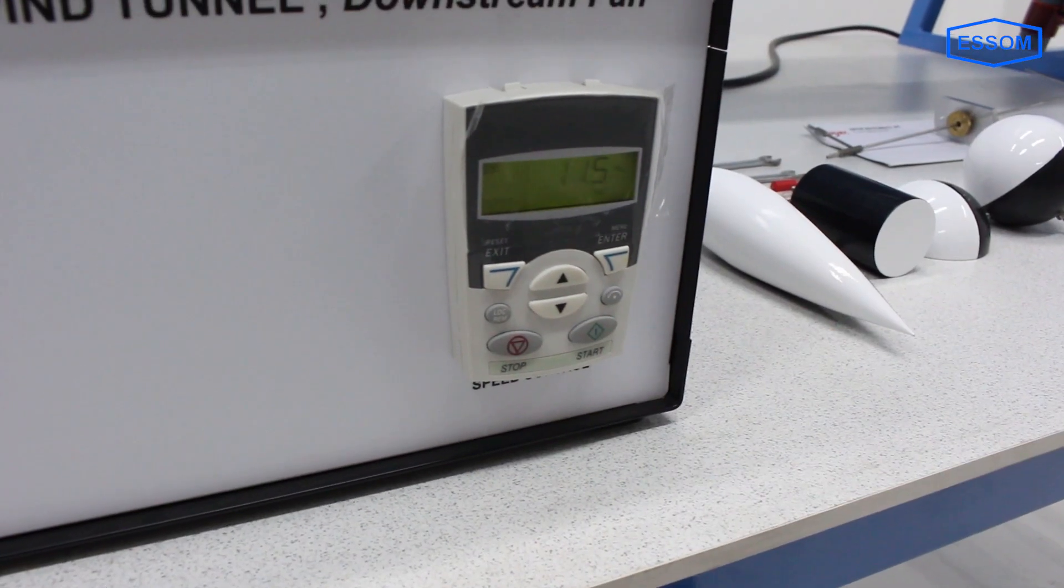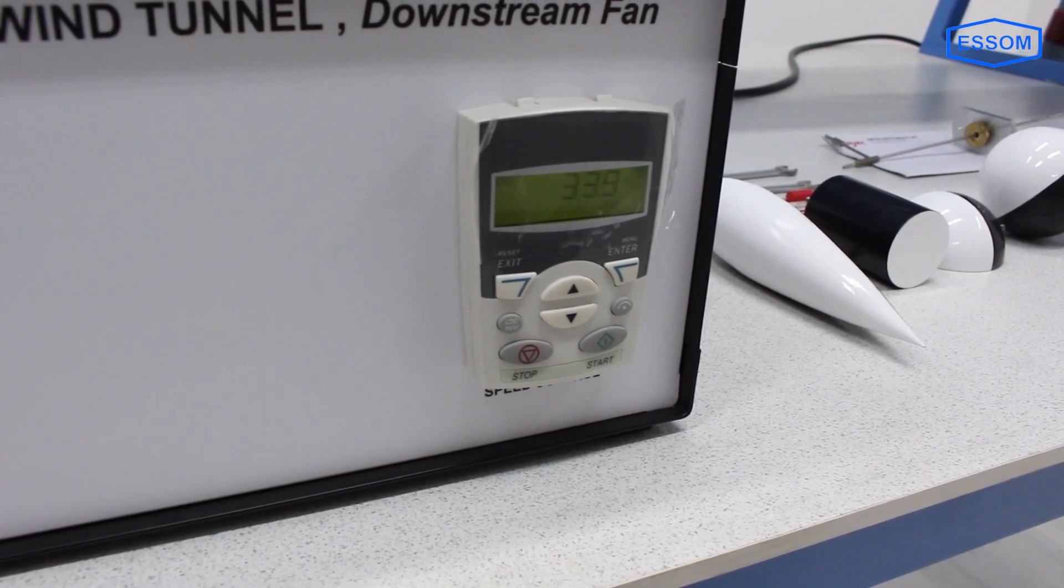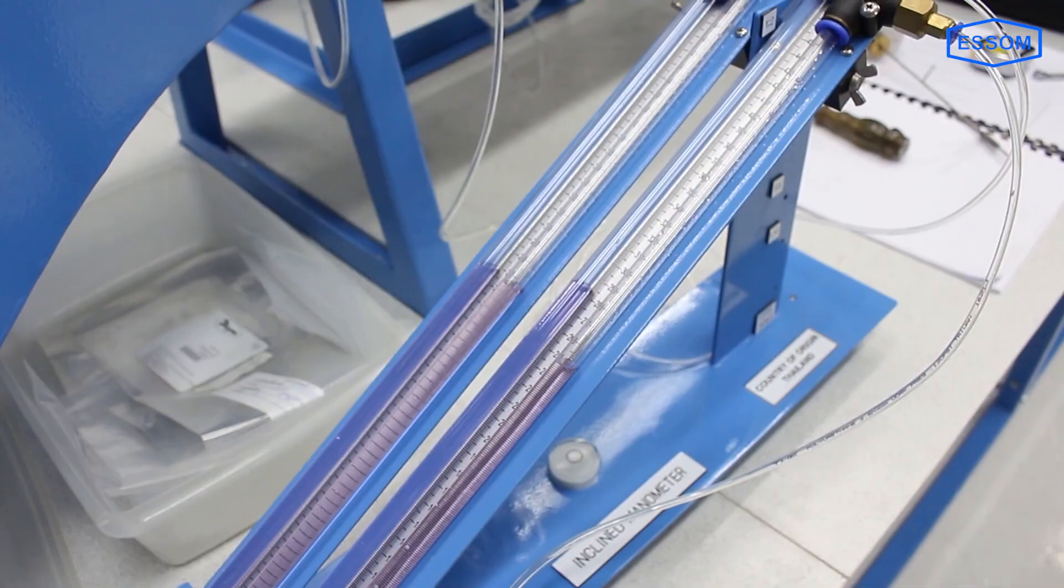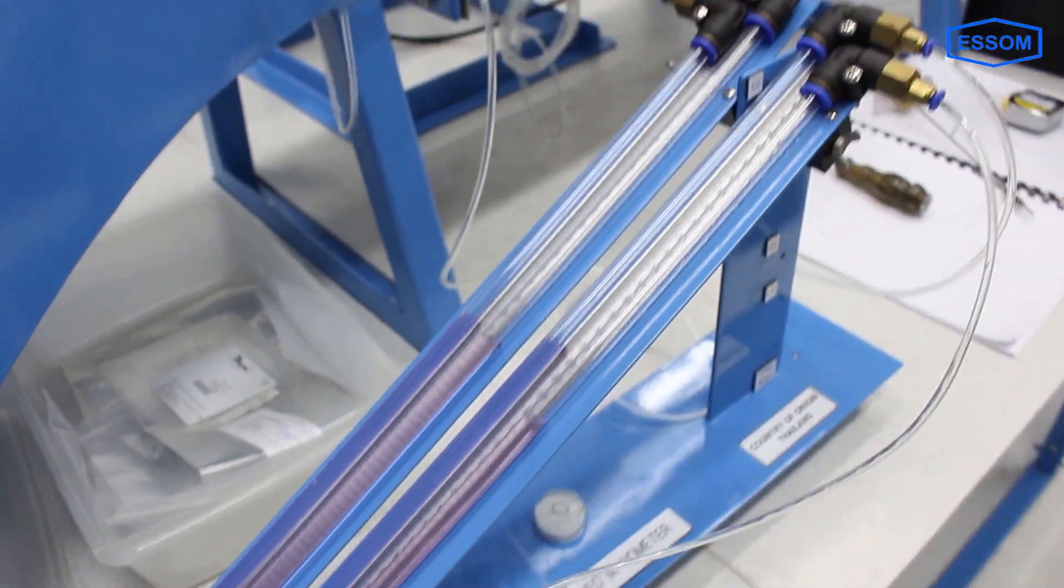Fan speed is adjustable by an inverter. Air speed is indicated by an inclined manometer and a calibration graph.